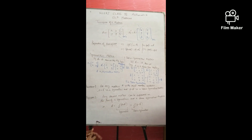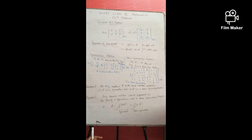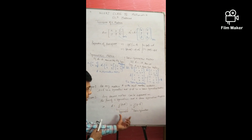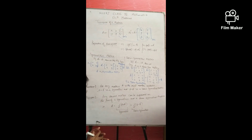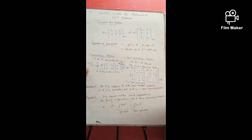Theorem 2: any square matrix can be expressed as the sum of a symmetric and a skew-symmetric matrix. That is, A = (1/2)(A + A') + (1/2)(A − A'), where the first part is the symmetric matrix and the second part is the skew-symmetric matrix. The proof is straightforward. Now we move to questions based on transpose, symmetric, and skew-symmetric matrices.